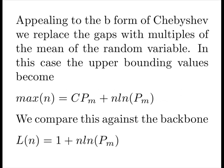Appealing to the B form of the Chebyshev, we replace the gaps with multiples of the mean of a random variable. In this case, the upper bounding values become p plus n, the number of gaps, times the logarithm, which we compare against the backbone.